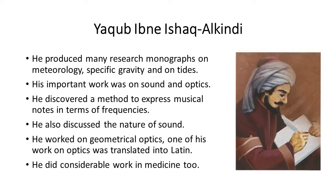Next we move on to Yaqub Ibn Ishaq Al-Kindi. He was the first significant Arabian philosopher to utilize and develop philosophical conceptions of Greek thought, and his work significantly affected the intellectual development of Western Europe in the 13th century. Al-Kindi developed a theory that everything in the world emits rays in every direction, which fills the whole world. This theory of the active power of rays influenced later scholars such as Ibn Al-Haytham, Robert Grosseteste, and Roger Bacon.